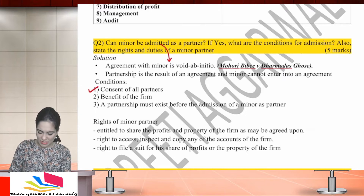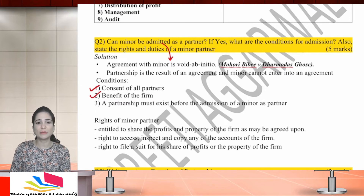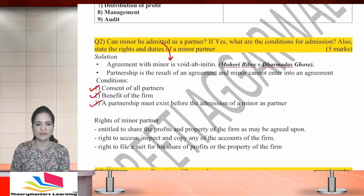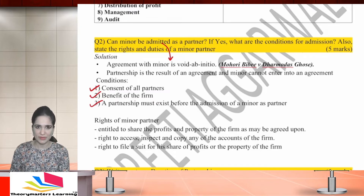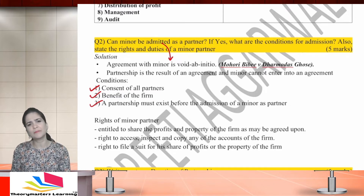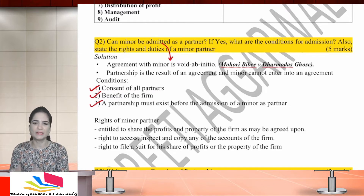However, a minor may become a partner with the consent of all the partners, if the admission is for the benefit of the firm, and there must be an existing partnership before the admission of the minor. This means a minor can be admitted only into an existing firm — you cannot form a new partnership with a minor. The partnership must already exist before you can admit a minor as a partner.